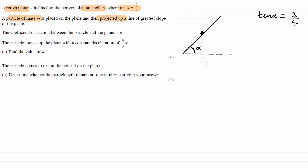Here is our particle; it has a weight of mg and the whole thing is moving up the slope, so the velocity is, at least initially, in that direction. The coefficient of friction between the particle and the plane is mu. Friction will go in the opposite direction to motion — if it's moving up the slope, friction will oppose that and go down the slope.